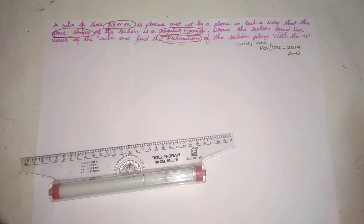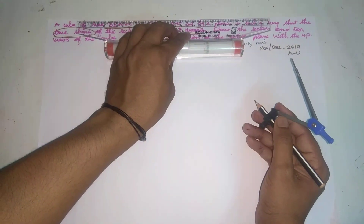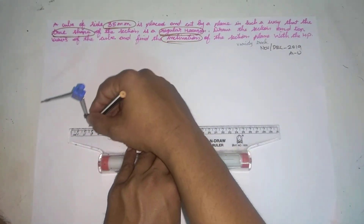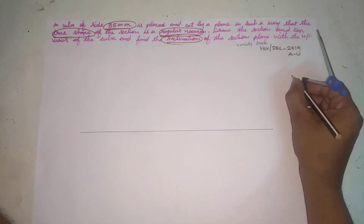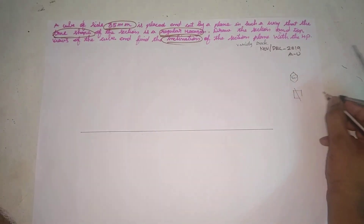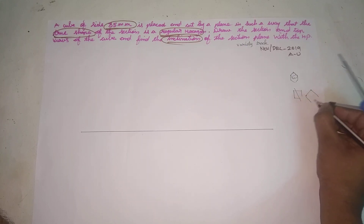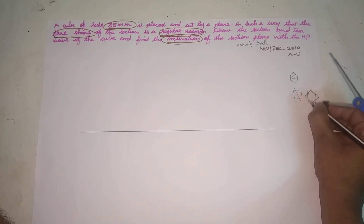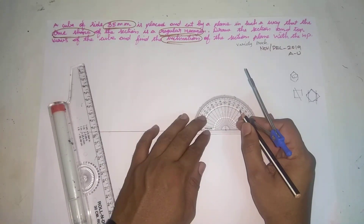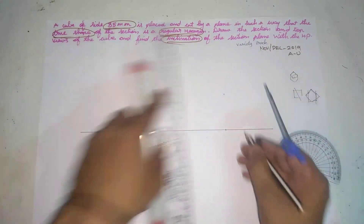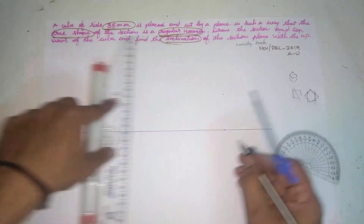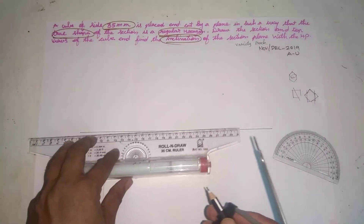We need to find the cube and find the inclination. First of all, draw the XY reference line. We are going to find the hexagon. Draw a perpendicular line as the reference line. After the line, draw a horizontal line for the cube.